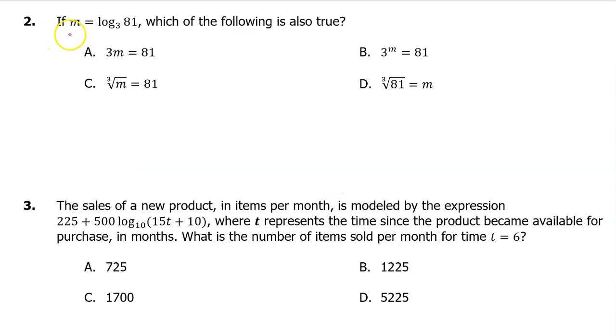Number 2. If M equals log base 3 of 81, which of the following is also true? We can rewrite this logarithmic equation in exponential form by dropping a base 3 on both sides of the equation. This is called exponentiating both sides of the equation because we have now made both sides into the exponents of these 3s.